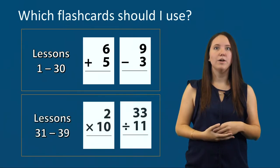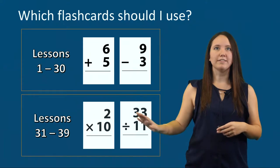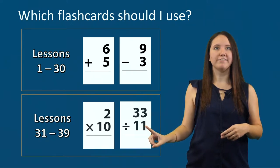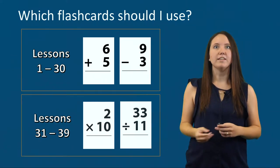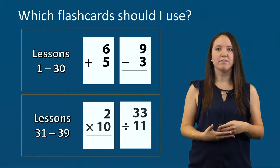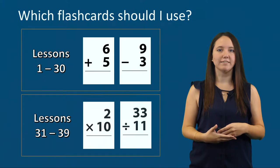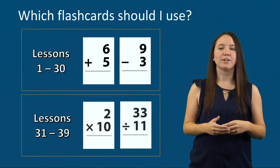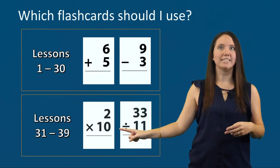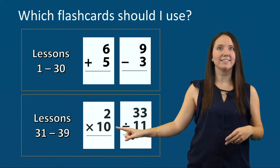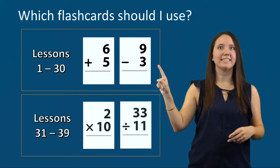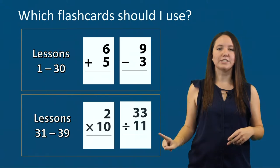In Lesson 31, we introduce Multiplication and Division flashcards. After Lesson 31, the intervention introduces a combination of Multiplication and Division flashcards during each lesson. Similarly to Lessons 1-30, students who struggle can start with Multiplication flashcards in Lesson 31, and as they become more fluent, you can add in Division flashcards. To summarize: for Lessons 1-30, use Addition and Subtraction flashcards; for Lessons 31-39, use Multiplication and Division flashcards.